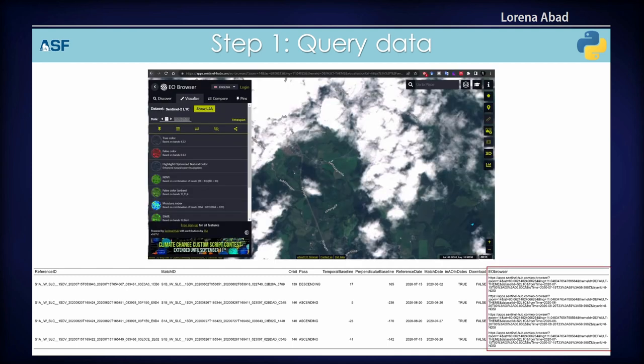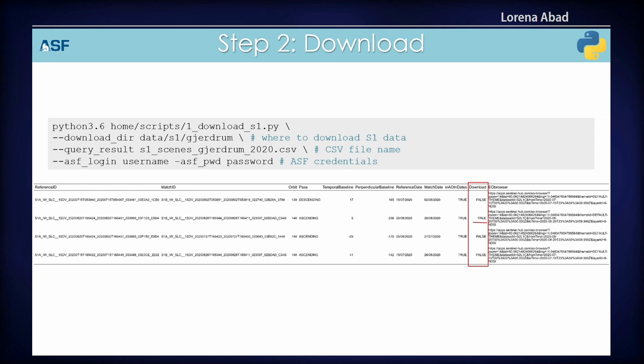I also added a URL to the EO Browser of Sentinel Hub so you can look at how the area appeared in optical imagery around these dates. You can see whether there was snow — not useful for interferometric SAR — too many clouds, or heavy rain affecting the atmospheric conditions. This helps you choose the best pairs. From here, you can take a look at how everything is going.